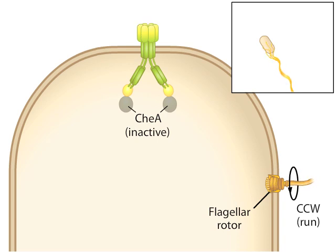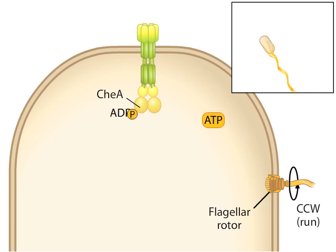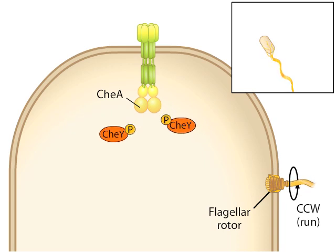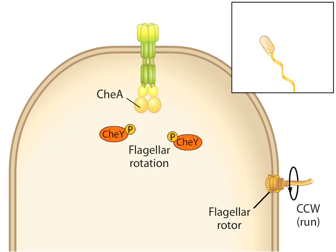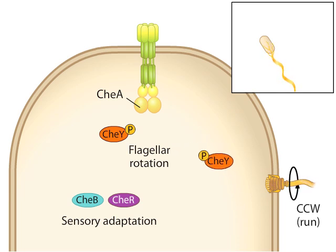In contrast, when no attractant binds to the receptor, CheA becomes activated. Activated CheA uses ATP to phosphorylate itself, and then it transfers the phosphate groups to a protein called CheY, which regulates flagellar rotation. A few other proteins called CheB and CheR participate in sensory adaptation, but we will ignore them for now. When CheY is phosphorylated, it binds to the rotor of the flagellum, reversing its rotation to clockwise.